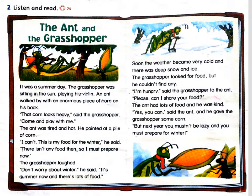Let's go. The ant was tired and hot. He pointed at a pile of corn. 'I can't. This is my food for the winter,' he said. 'There isn't any food then, so I must prepare now.' The grasshopper laughed. 'Don't worry about winter,' he said. 'It's summer now and there's lots of food.' Soon the weather became very cold and there was deep snow and ice. The grasshopper looked for food, but he couldn't find any. 'I'm hungry,' said the grasshopper to the ant. 'Please, can I share your food?' The ant had lots of food and he was kind. 'Yes, you can,' said the ant, and he gave the grasshopper some corn.